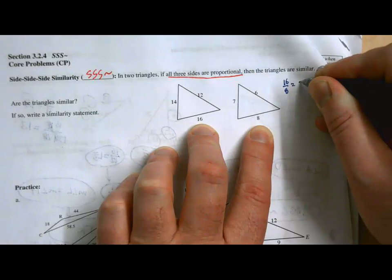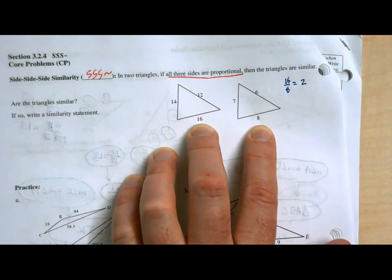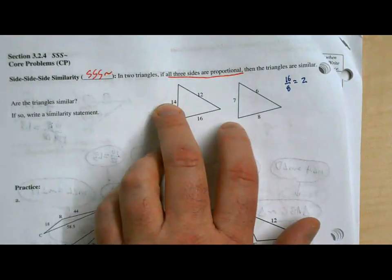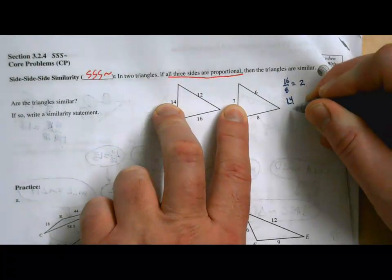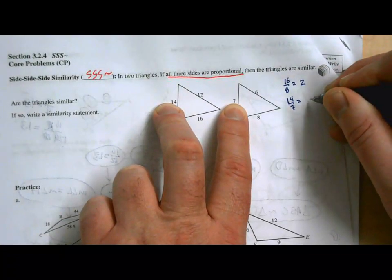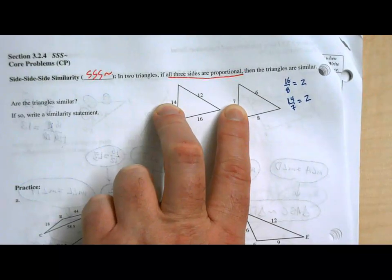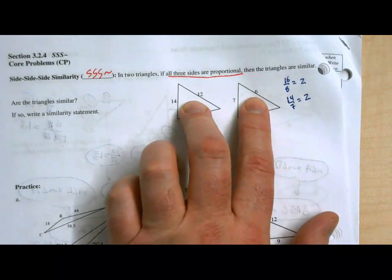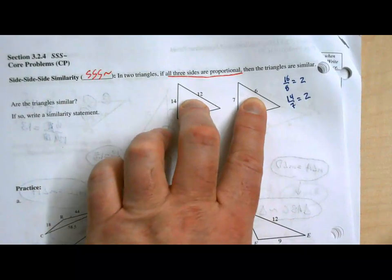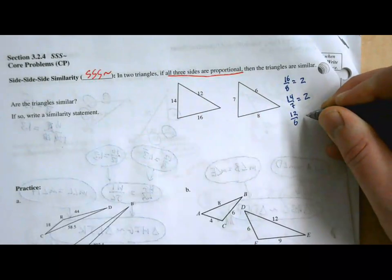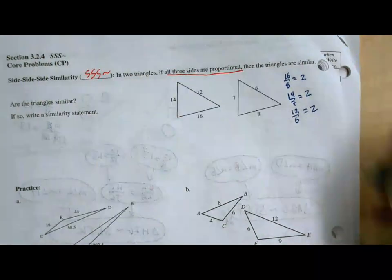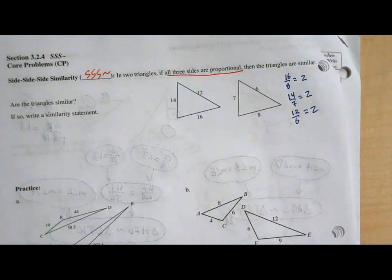The next biggest would be the 14 and the 7, and if I make a ratio out of 14 and 7, do we get the same thing? Yes. All right, one more to go. We've got to show that the third ratio is also equal. The smallest side in each triangle is the 12 and the 6, and once again we get 2.